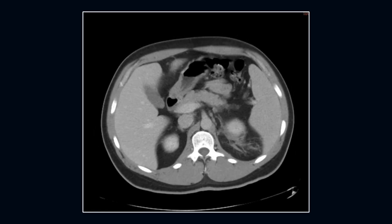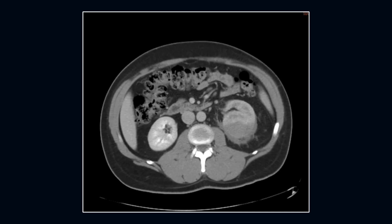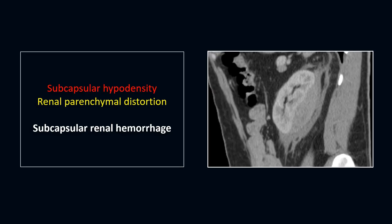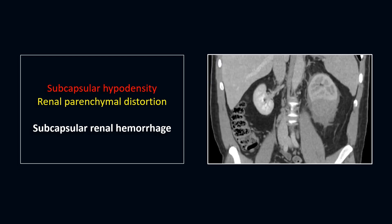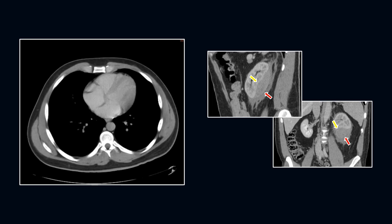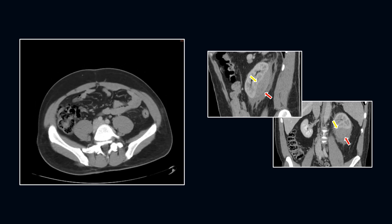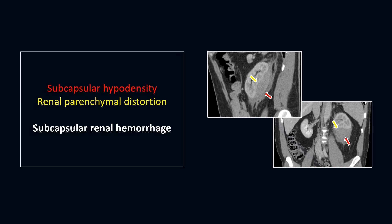Next case, here we see the abnormality is involving the left kidney. There is a subcapsular hyperdensity causing mass effect on the kidney. On the coronal images, you see the subcapsular collection causing mass effect on the lower pole of the kidney. The left kidney contour has been distorted by this subcapsular collection.